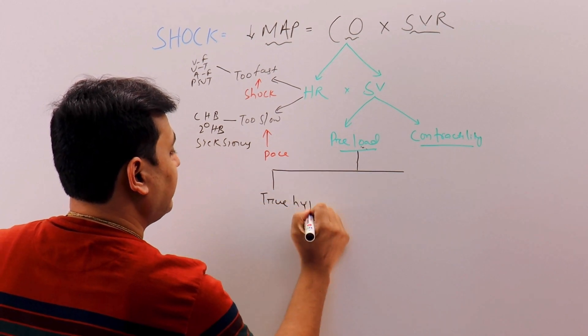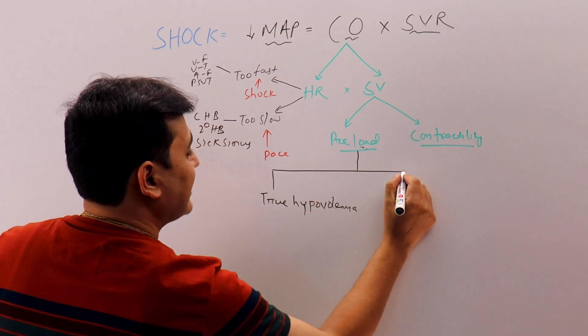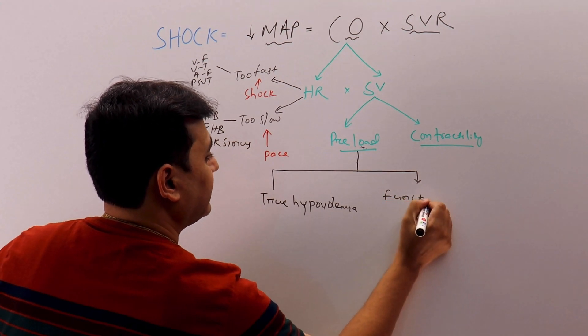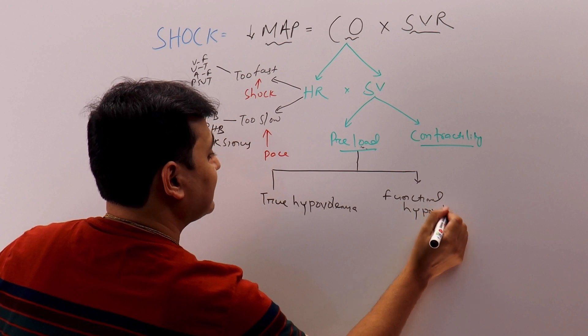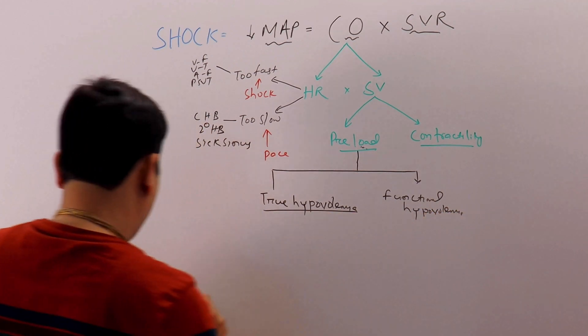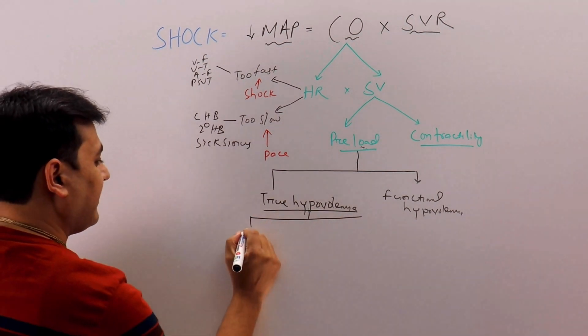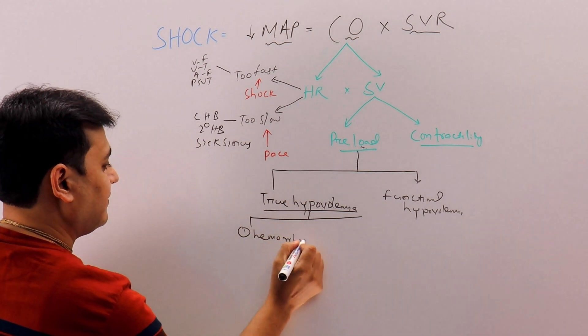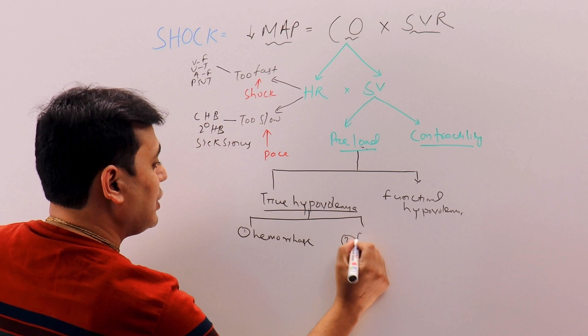First will be true hypovolemia and second will be functional hypovolemia. So in the true hypovolemia class we can have two types: for example, number one we can have hemorrhage and number two we can have fluid loss.